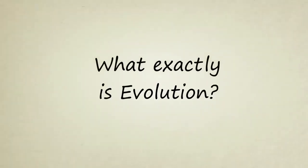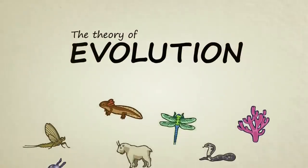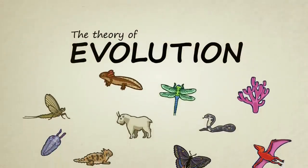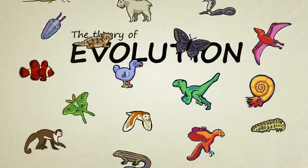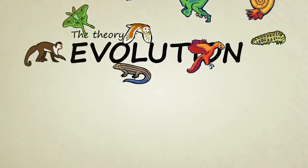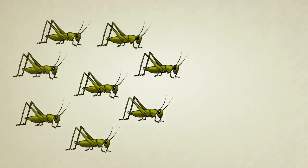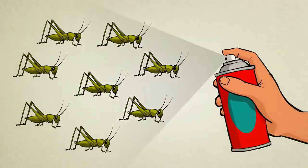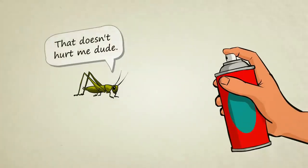What exactly is evolution? In biology, the theory of evolution doesn't tell us exactly how life began on Earth, but it helps us understand how life, once it came into existence, diversified into the many incredible forms we see now and in the fossil record. It also helps us make sense of the way in which modern creatures continue to adapt and change today.